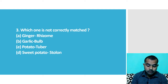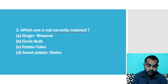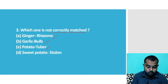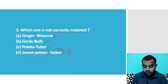The third question asks which one is not correctly matched. Ginger is propagated with rhizome — correct. Garlic with bulb — correct. Potato with tuber — correct. But sweet potato with stolon — that is not right. Sweet potato is actually a tuberous root.